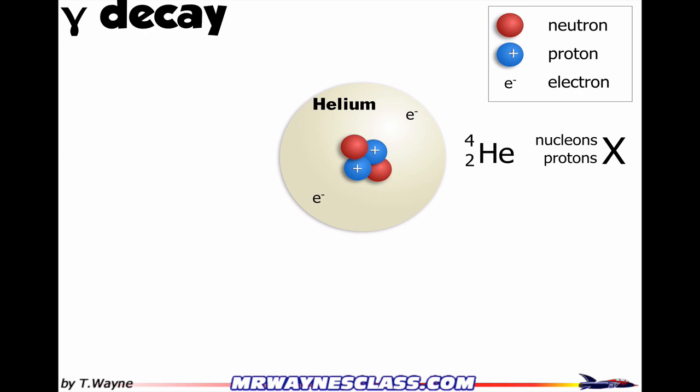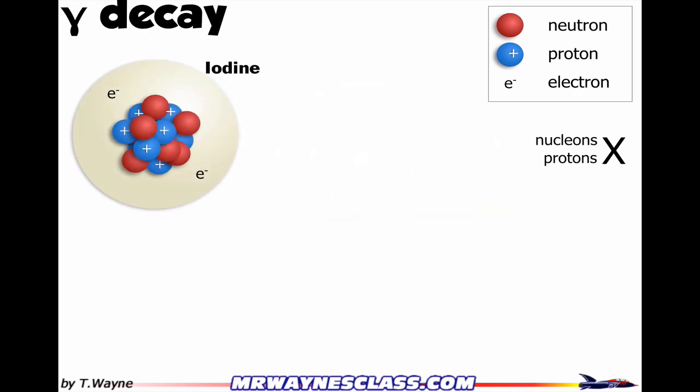All right, let's move along to something that goes through gamma decay, and that'll be a radioactive or an excited state of iodine. So it's not regular iodine, it's an excited state of iodine. And what happens is this excited state will then lose energy and give off a high-energy gamma photon.